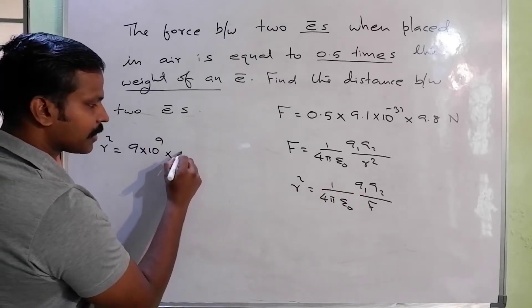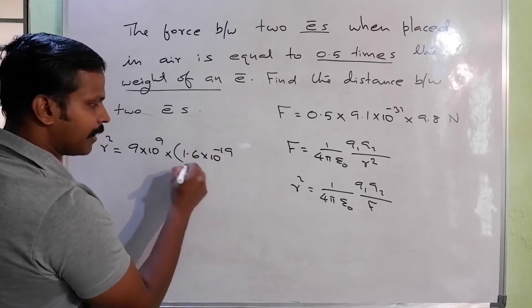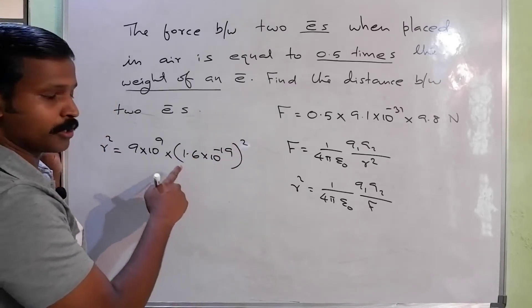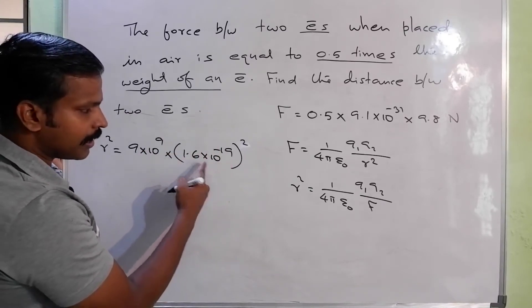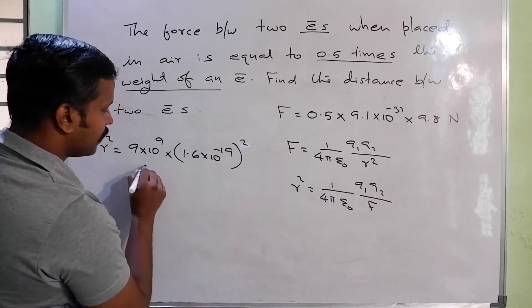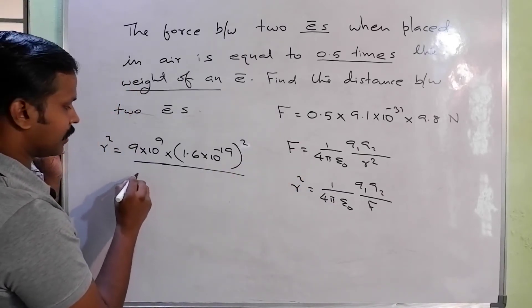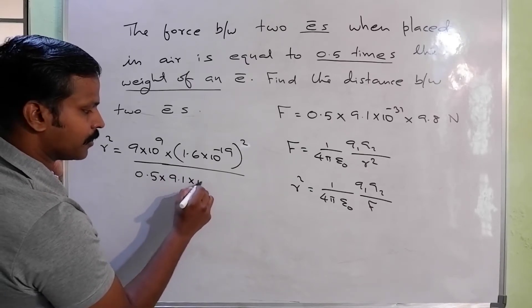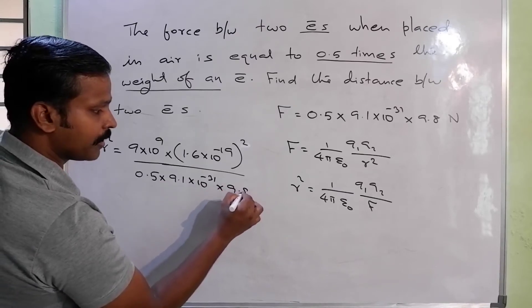Q1 and Q2: substituting 1.6 into 10 raised to minus 19 for both. Q1 into Q2 is 1.6 into 10 raised to minus 19, divided by F. The F value is equal to 0.5 into 9.1 into 10 raised to minus 31 into 9.8.